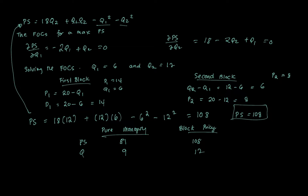We can also show that under block pricing, deadweight loss decreases because the firm can supply more at a lower price. Furthermore, the more block prices the monopolist can set, the closer it gets to perfect price discrimination — though implementing more and more blocks becomes increasingly harder.